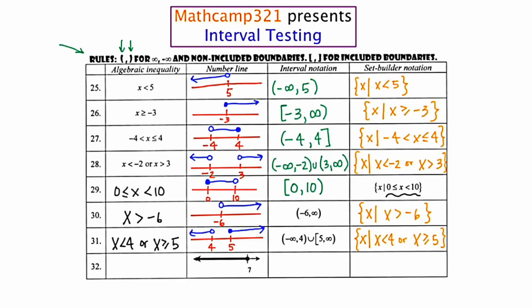Our last one: they give us the number line and we have to go to the interval. This is going to be negative infinity up to 7, and it's included — so we use a bracket. The algebraic inequality is x is less than or equal to 7, and the set builder notation is x such that x is less than or equal to 7. I hope this short video on the rules for interval notation has helped. We're going to be using this quite frequently in Algebra 2 Trig, and you'll see it again in pre-calculus and most definitely in calculus.